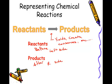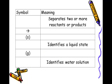Let's look at some symbols that we can use in chemical reactions. If we have more than one reactant or more than one product, we're going to use a plus sign to separate them. Remember, our arrow means creates, forms, yields.